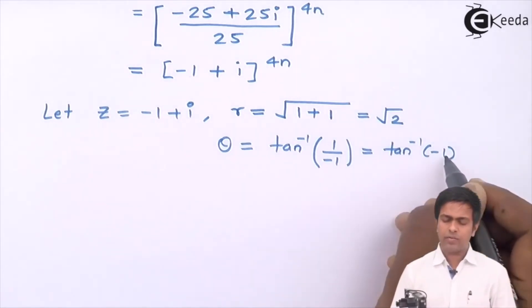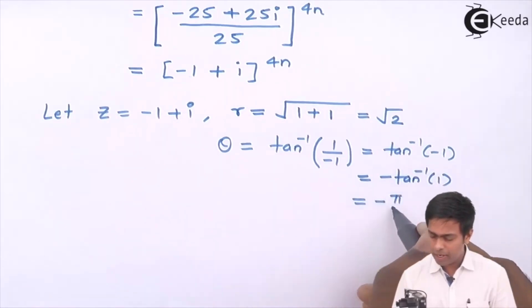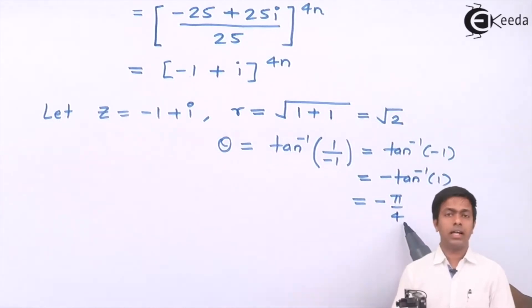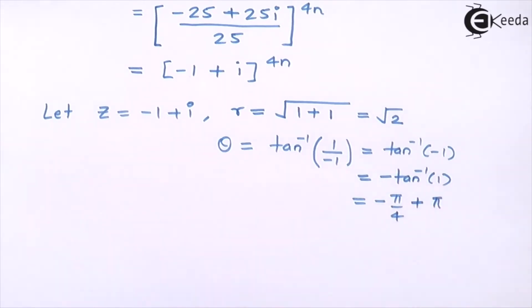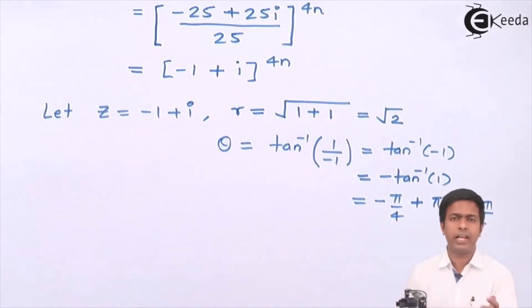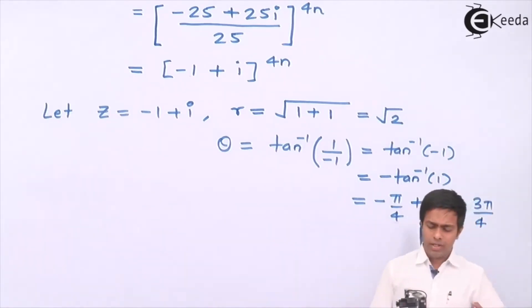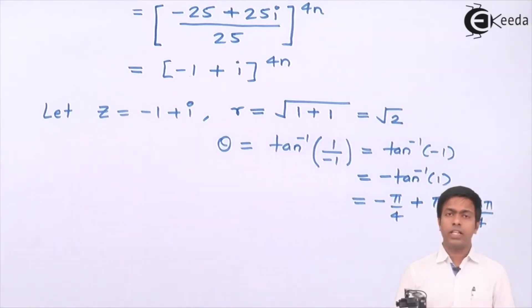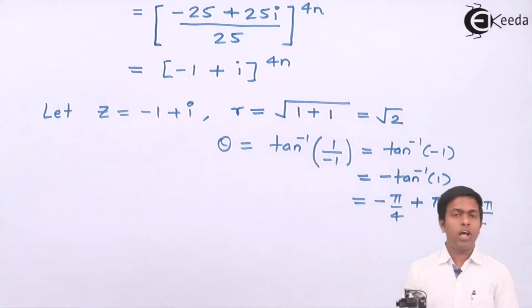tan⁻¹(-1) = -π/4, but that places the angle in the fourth quadrant. To bring it into the second quadrant, we add π, giving θ = -π/4 + π = 3π/4. This equals 135°, which lies in the second quadrant. We must always use the principal value of θ, which must lie between -π and +π.